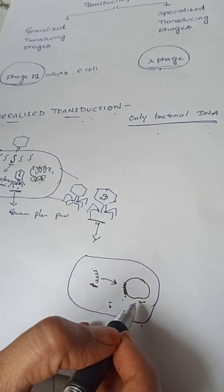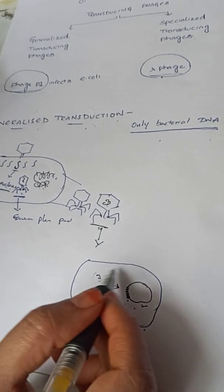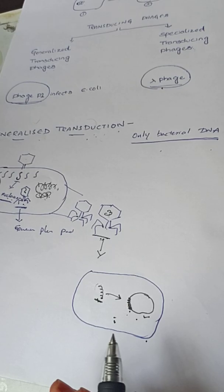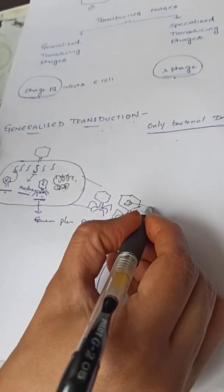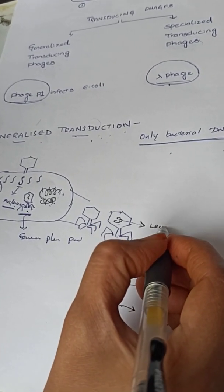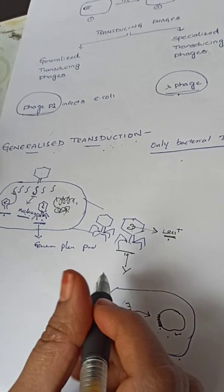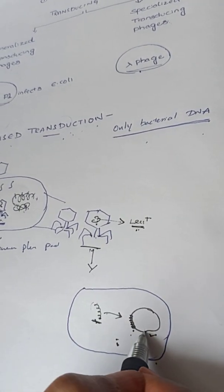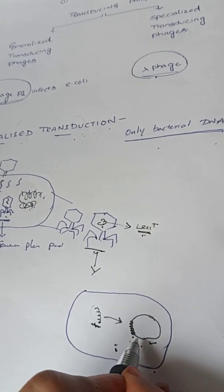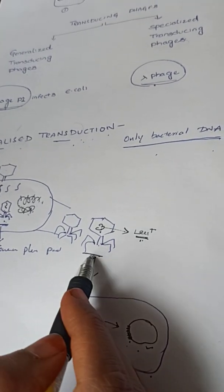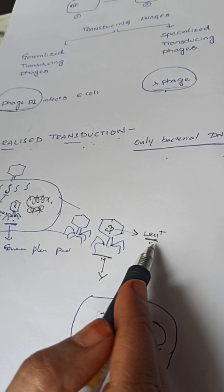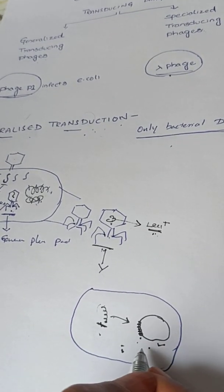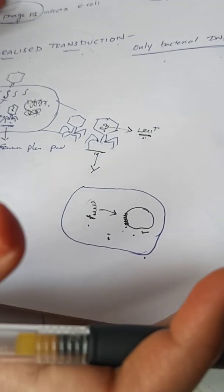This DNA fragment gets integrated within the bacterial genome and adds new properties to the bacterial cell that received it. For example, say the gene transferred is important for leucine synthesis — leucine is an amino acid. If the new host cell was not previously having genes for leucine synthesis, then because of the entry of this leucine synthesis gene, this bacterial cell will now gain the new property of leucine synthesis. This is all about generalized transduction.